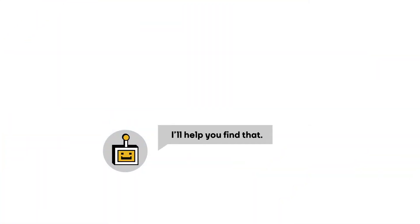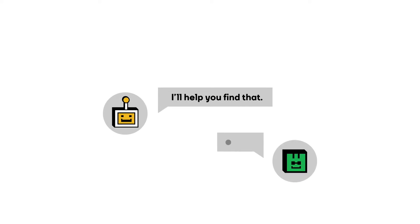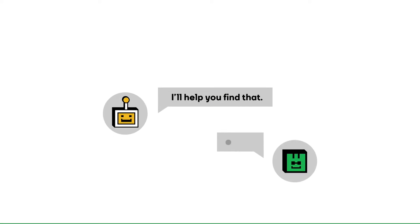We should try to use the active voice as much as possible. Instead of saying, "The link is being shared below," your chatbot can say, "I'm sharing the link below." Finally, you should use the second person — you, your — to address your users so they feel like the chatbot is talking directly to them.